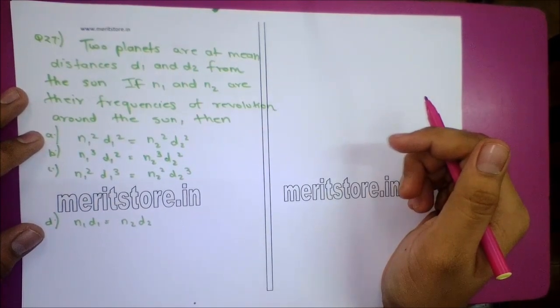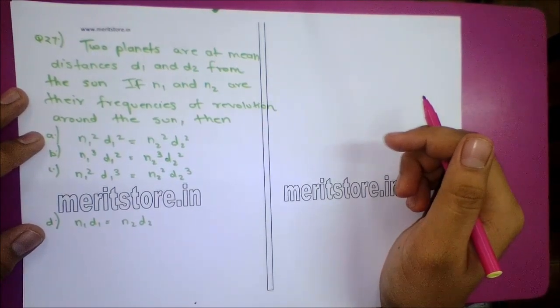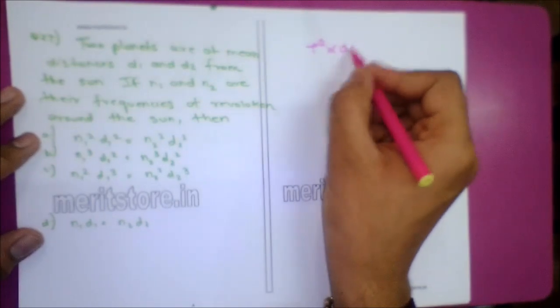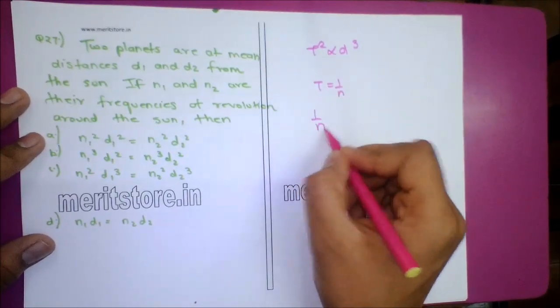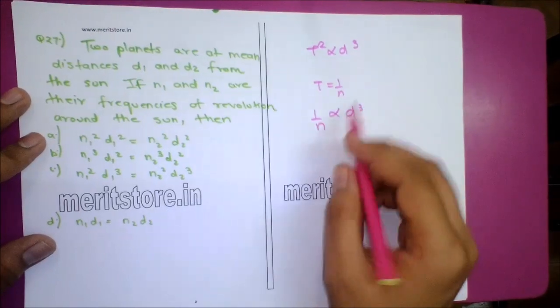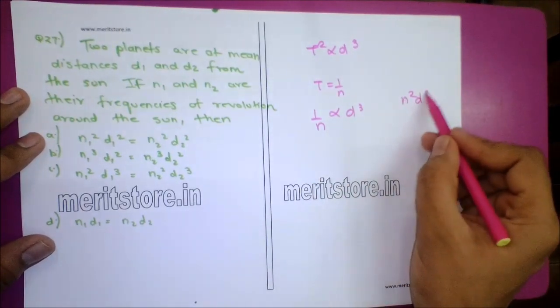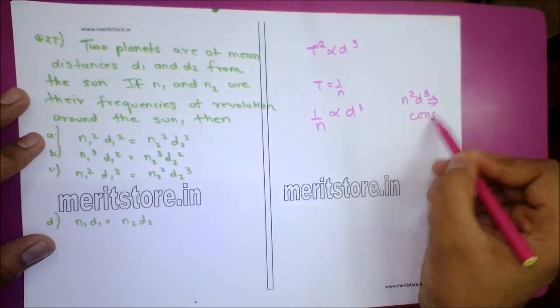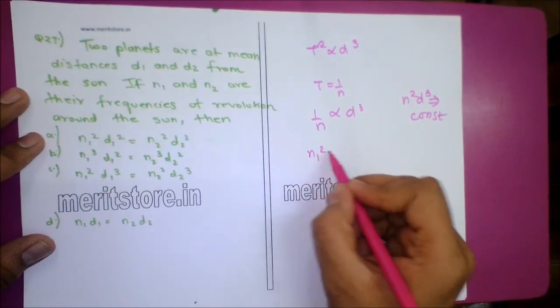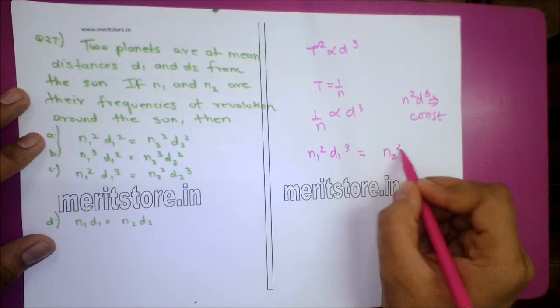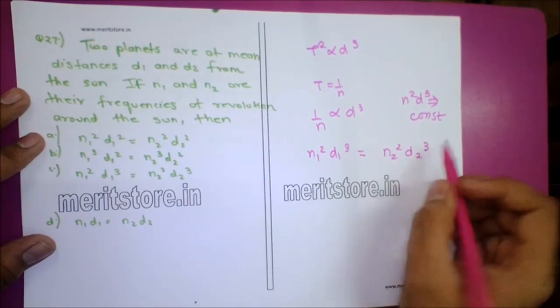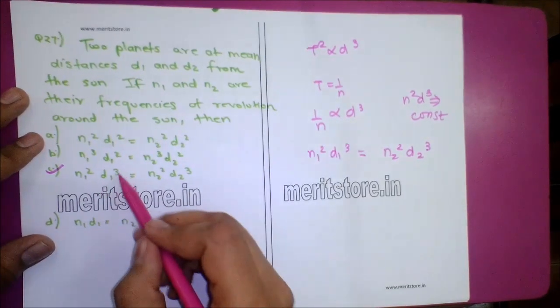Question 27: Two planets are at mean distances D1 and D2 from the Sun. N1 and N2 are their frequencies of revolution. Since T² ∝ D³ and T = 1/N, we get N² ∝ 1/D³, so N²D³ = constant. Therefore N1²D1³ = N2²D2³. Option C is the correct answer.